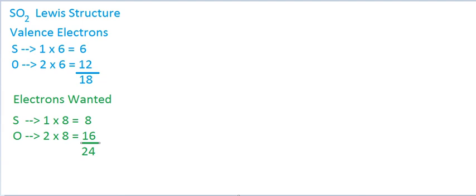Thinking about the octet rule, each element wants at least 8 electrons surrounding it in its valence shell, either through bonding or lone pairs, giving us 24 electrons wanted total. A word of caution: we'll find this gets violated here, because third-row elements have access to the 3d orbital. This means we can do what's called expanded valence — making Lewis structures with more than 8 electrons if needed to minimize formal charge.